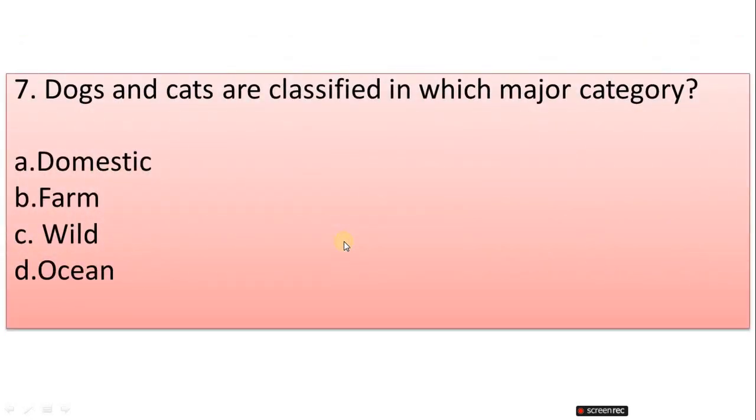Question 7: Dogs and cats are classified in which major category? A. Domestic, B. Farm, C. Wild, D. Ocean. Correct answer is option A, Domestic.